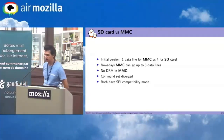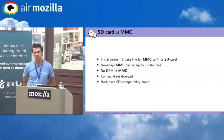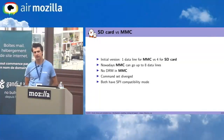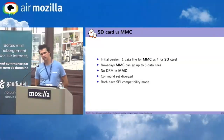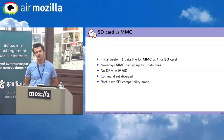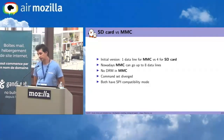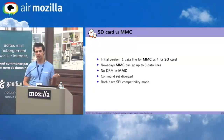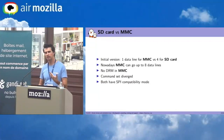Compared to MMC in the initial version, MMC had only one data line whereas SD card has four. Nowadays MMC can go up to eight data lines. There is no DRM in MMC, and over time the command sets have diverged. But both SD card and MMC have the SPI compatibility mode.